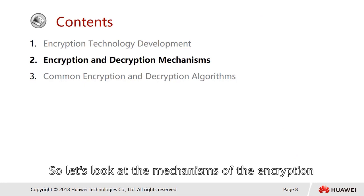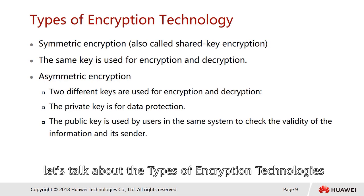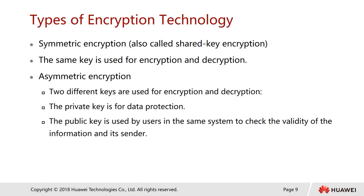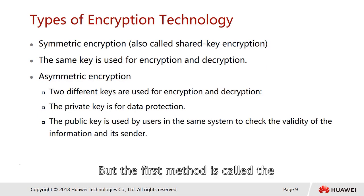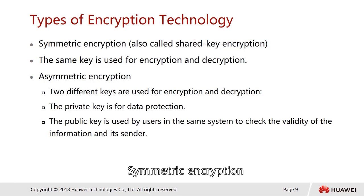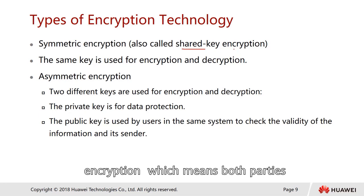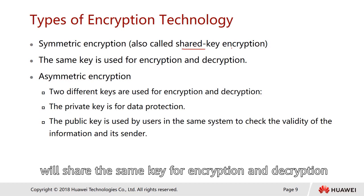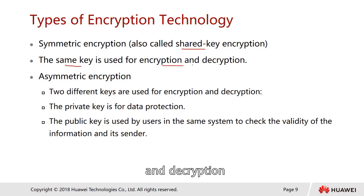Let's look at the mechanism of encryption and decryption. There are two types primarily used for encryption. The first method is called symmetric encryption, also known as shared key encryption, which means both parties share the same key for encrypting and also decrypting — the same key is used for both operations.